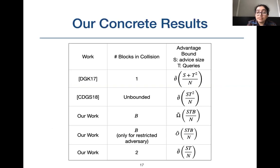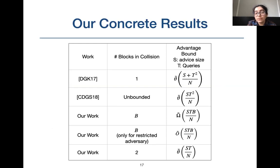To state our results more concretely: for B-block collision finding, the best known attack achieves an advantage of at least stB/n, which is our conjecture bound. We know from prior lower bounds that there cannot be an attack achieving better than stB/n advantage for all B ≤ T. So our conjecture bound is stB/n, but we could prove this upper bound only for a restricted class of zero-walk adversaries and for two-block-long collisions.